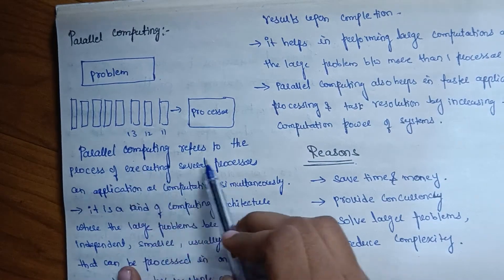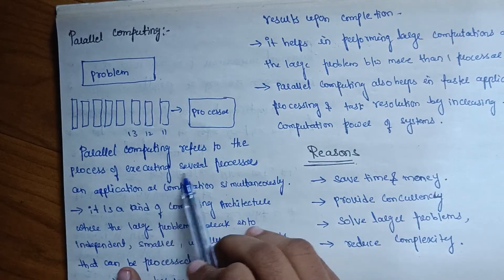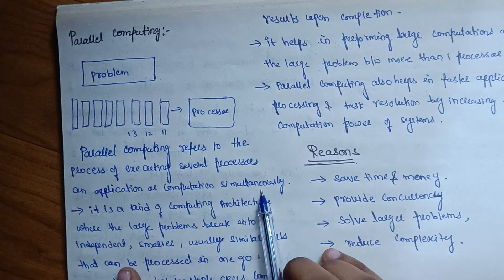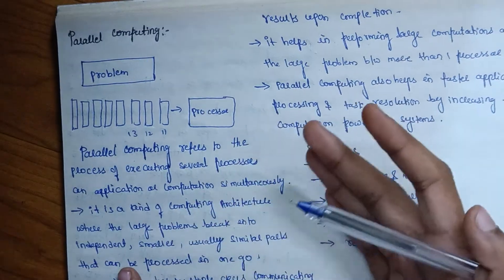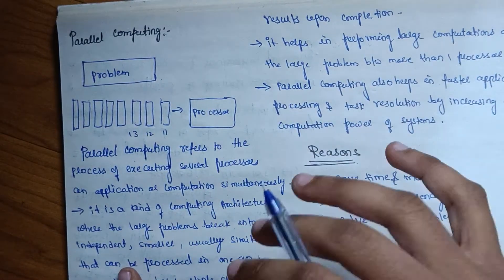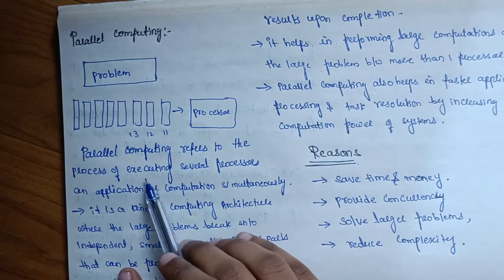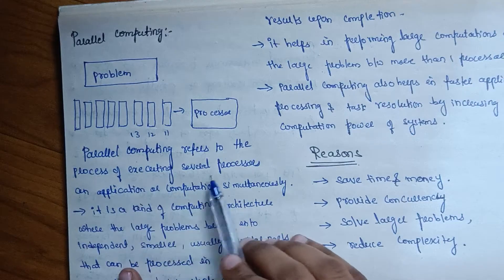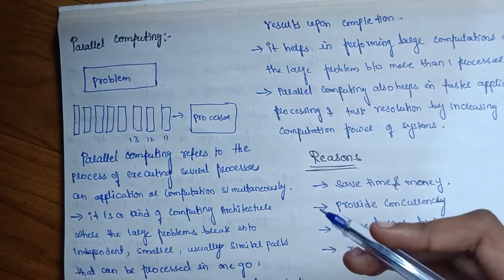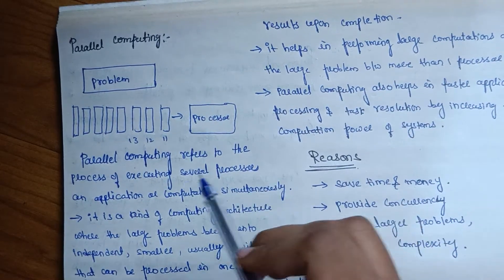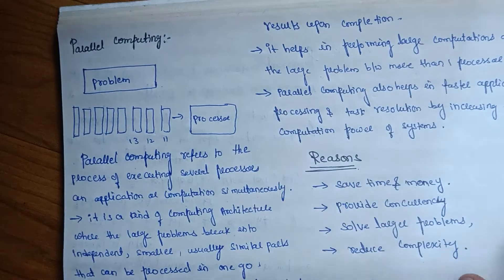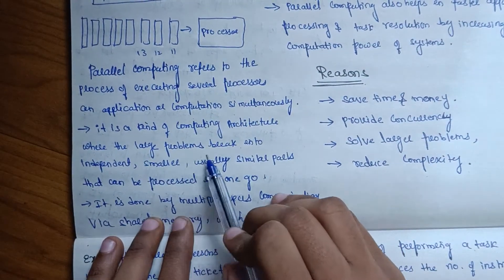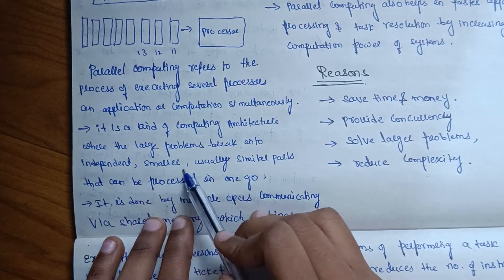Parallel computing refers to the process of executing several processes, applications, and computations simultaneously. It is a kind of computing architecture where large problems are broken into independent, smaller parts.